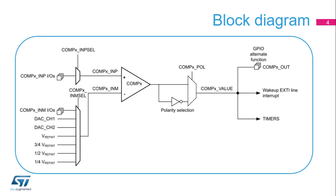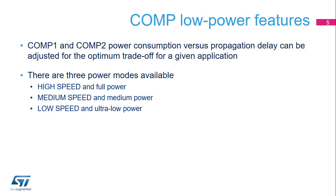This slide shows the general block diagram of the comparator integrated in the device. The comparator's power consumption can be adjusted to have the optimum trade-off between speed and energy efficiency for a given application. There are three modes available: high-speed, medium-speed, and ultra-low-power.